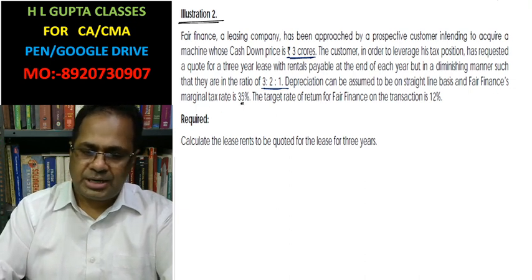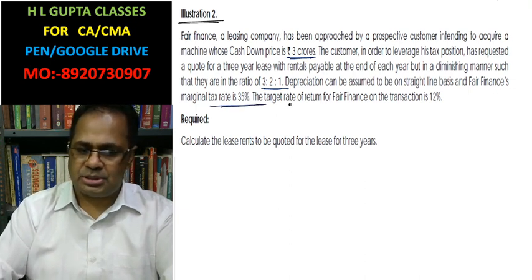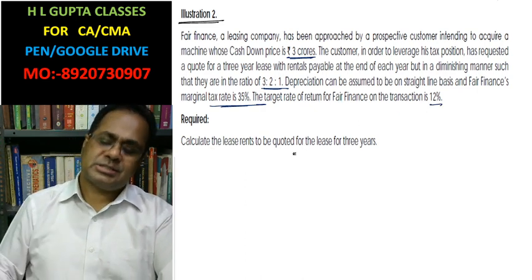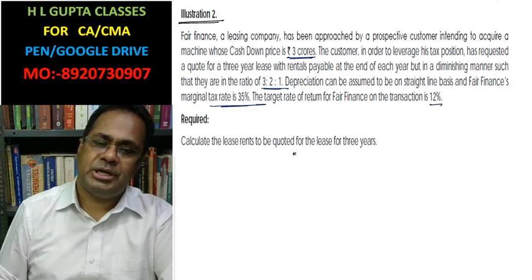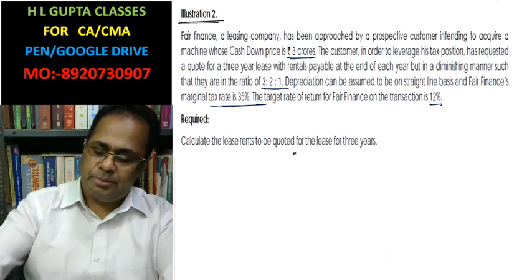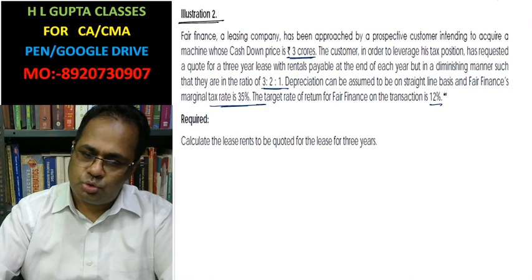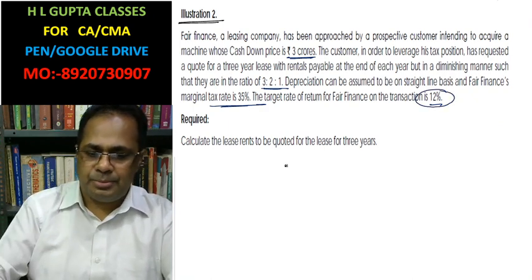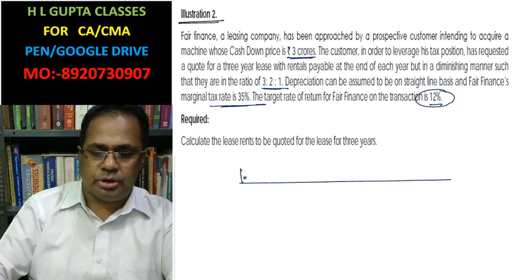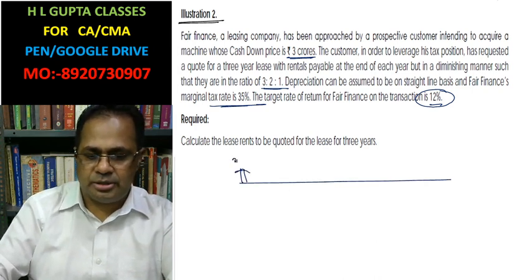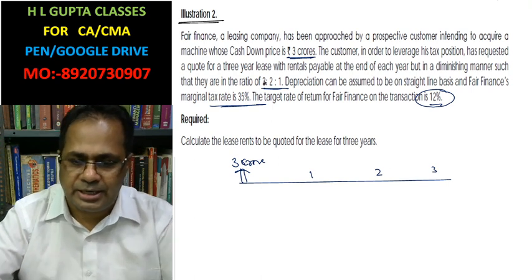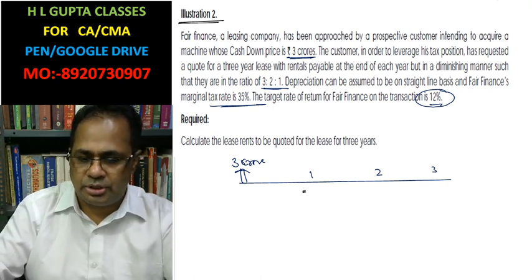Fair Finance's marginal tax rate is 35% and the target rate of return is 12%. Calculate the annual lease rent. In this case, you have to calculate the annual lease rent from the investor-lessor's point of view, so that the lessor achieves a 12% return. The lessor invests 3 crore and will receive lease rent in the ratio 3x : 2x : x.